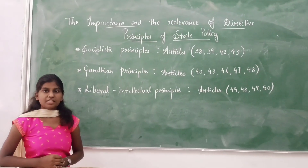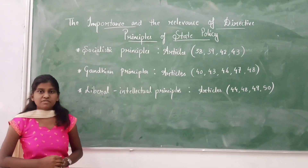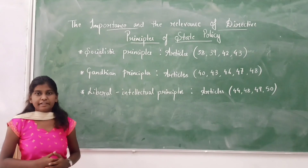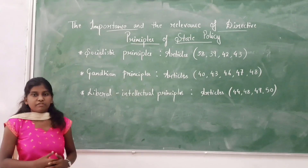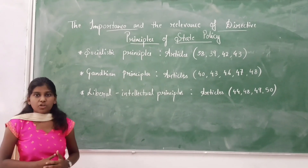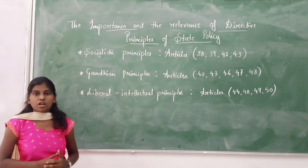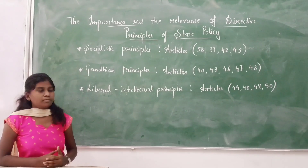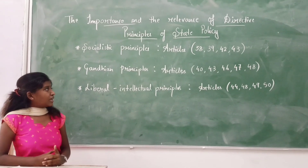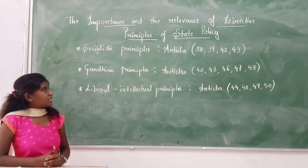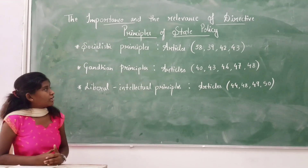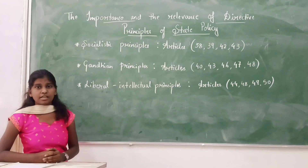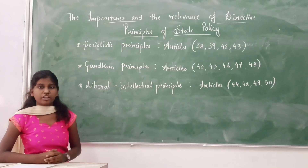The next: Gandhian principles are the principles based on Gandhian ideology, used to represent the program of reconstruction by the Gandhian regime during the national movement. This principle includes articles 40, 43, 46, 47, and 48.